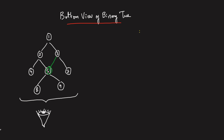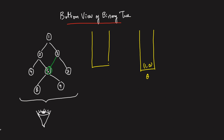To implement this, we initially take a queue data structure. In this queue we are going to store the root of the tree with line 0. At the same time, we take a map data structure. In this map we'll be storing the line number and the node value. Please make sure you take a map data structure so that it stores sorted lines — minus 2, then minus 1, then 0, and so on.